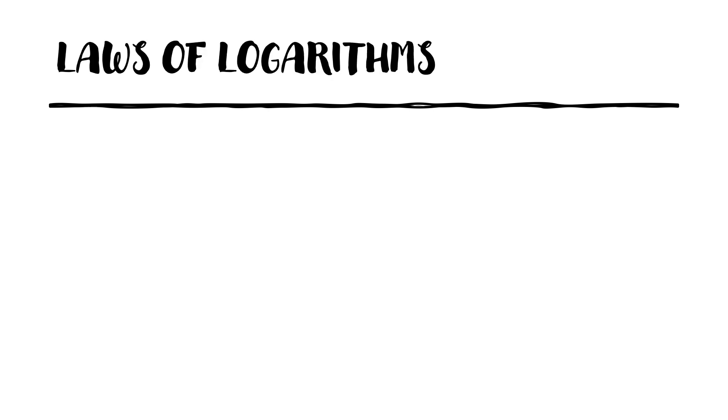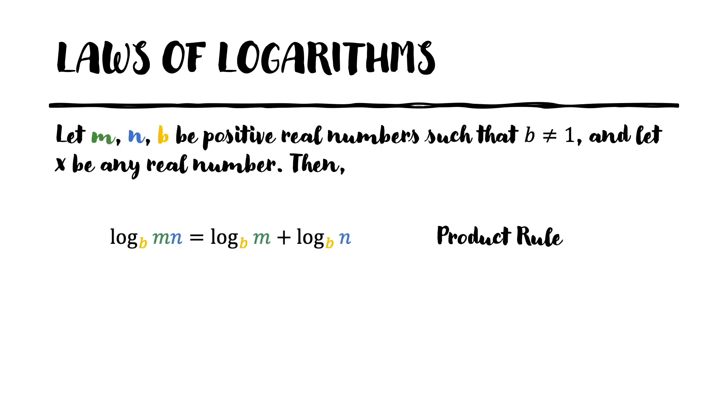Now let's look at some laws of logarithms. I want to point out that there are other laws of logarithms that are not included here, these are just some of the basics. The first law is the product rule. It says that the log of m times n base b is equal to the log of m base b plus the log of n base b.